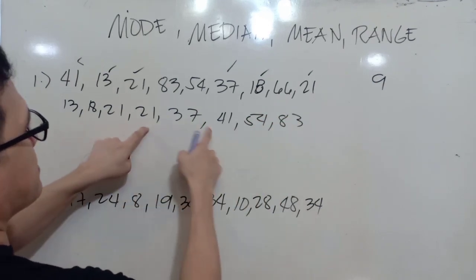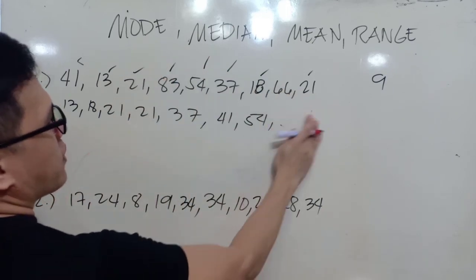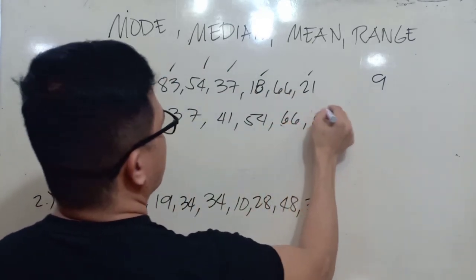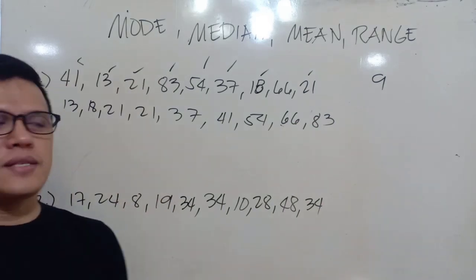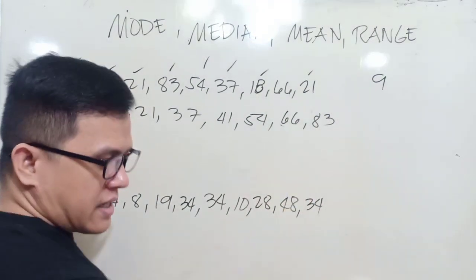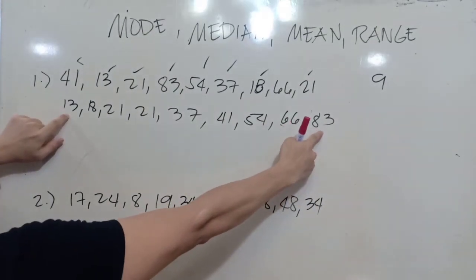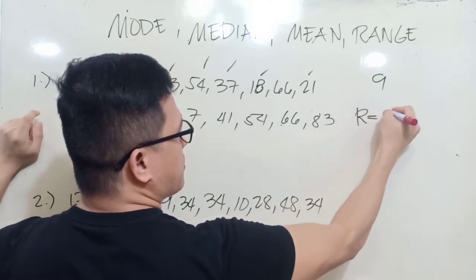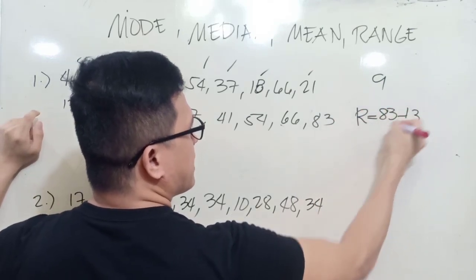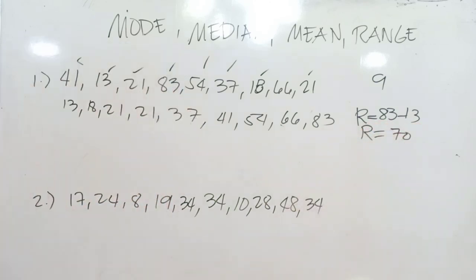Oh sorry, 54, and we have 66, and then 83. Now, to get the range, we just have to get the highest minus the lowest. So that's 83 minus 13. So that means our range is equal to 83 minus 13, and so that is equal to 70. So this is our range.